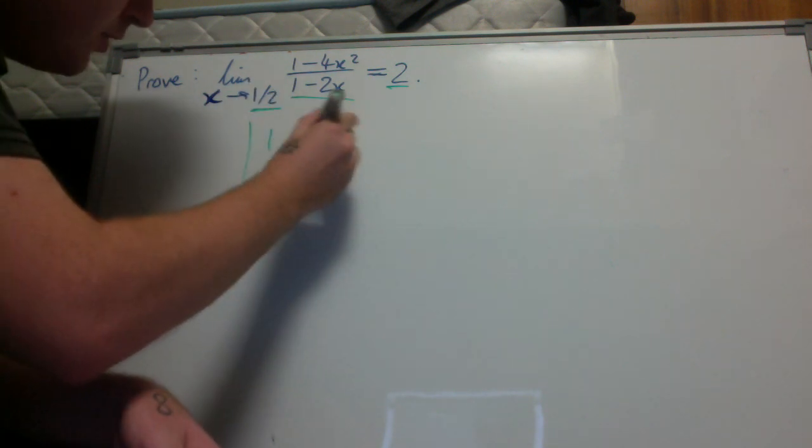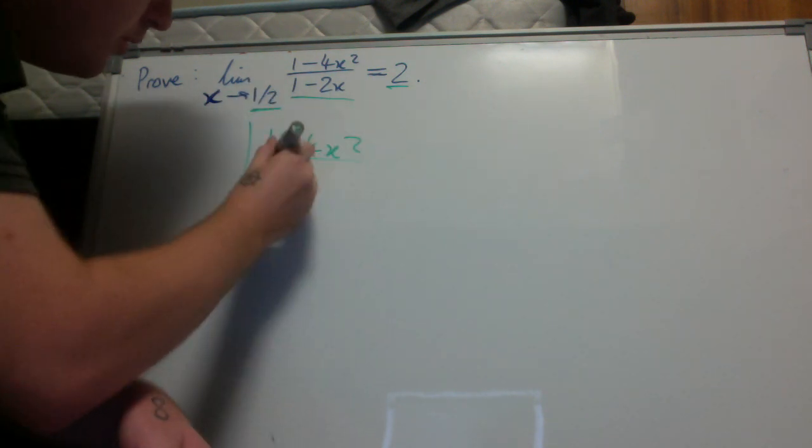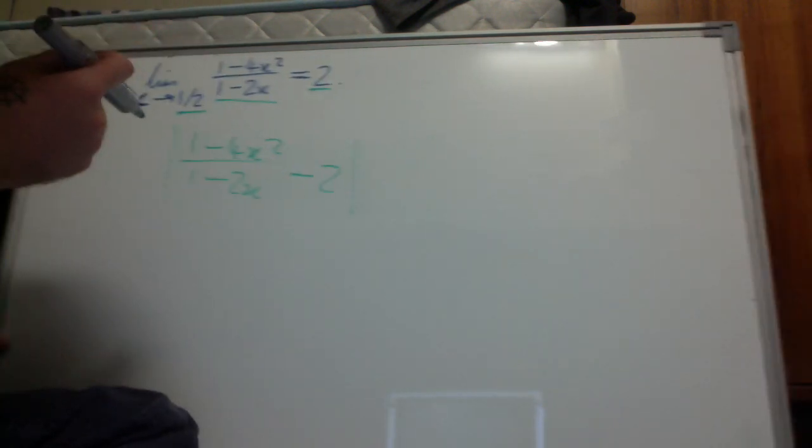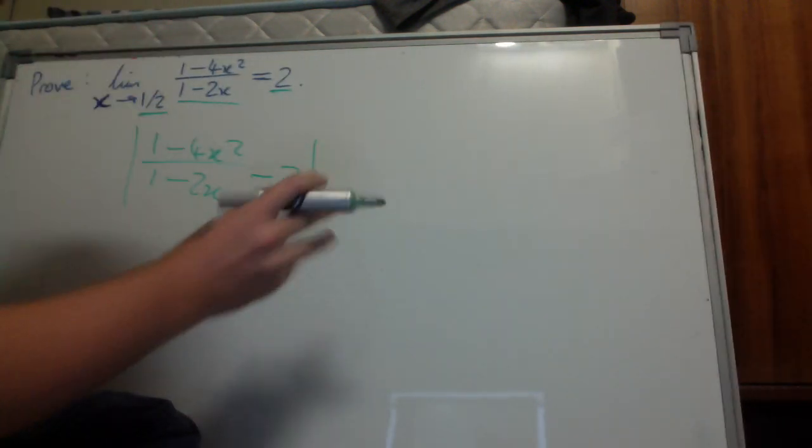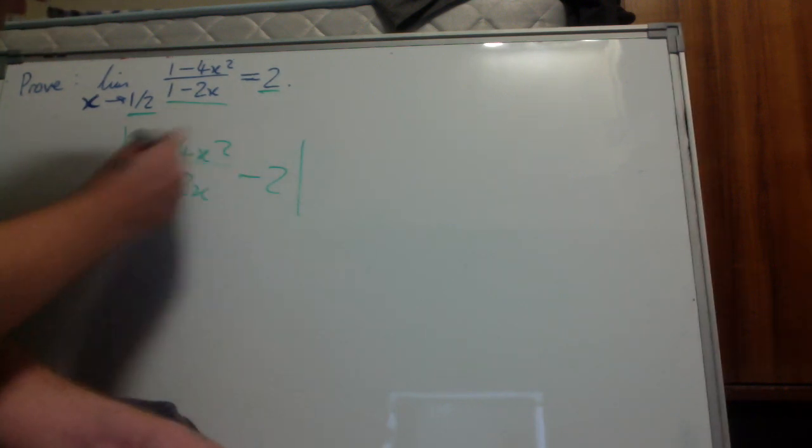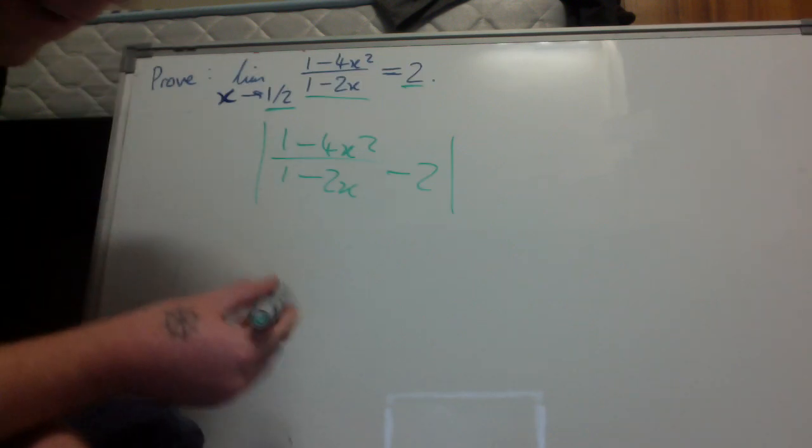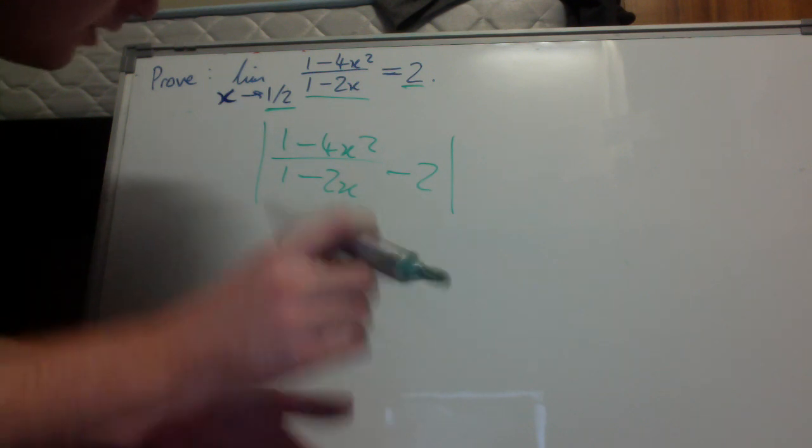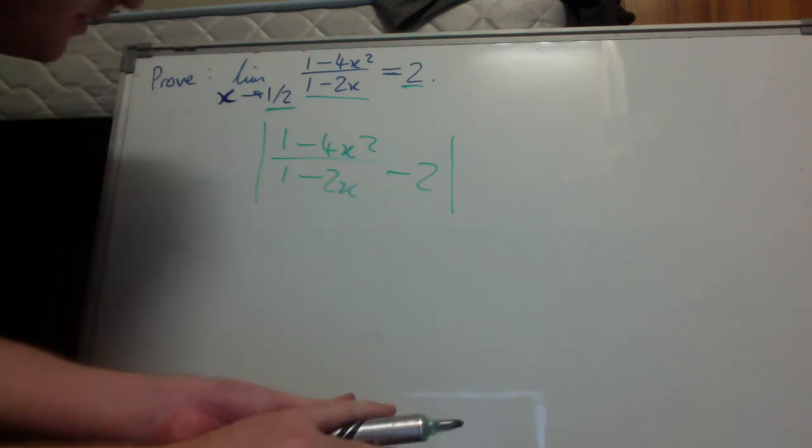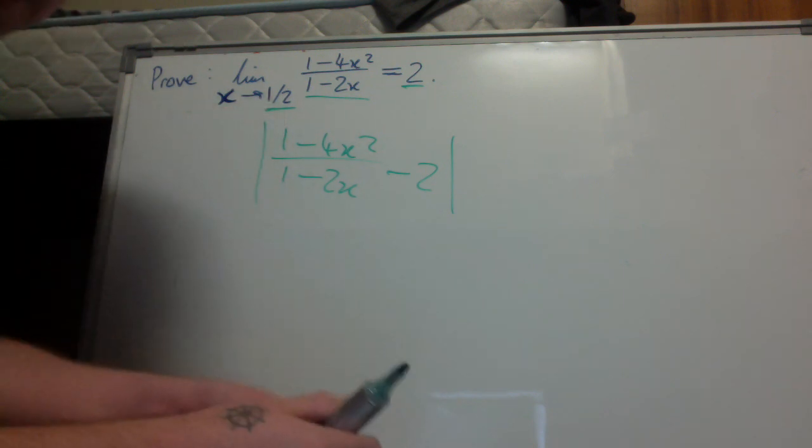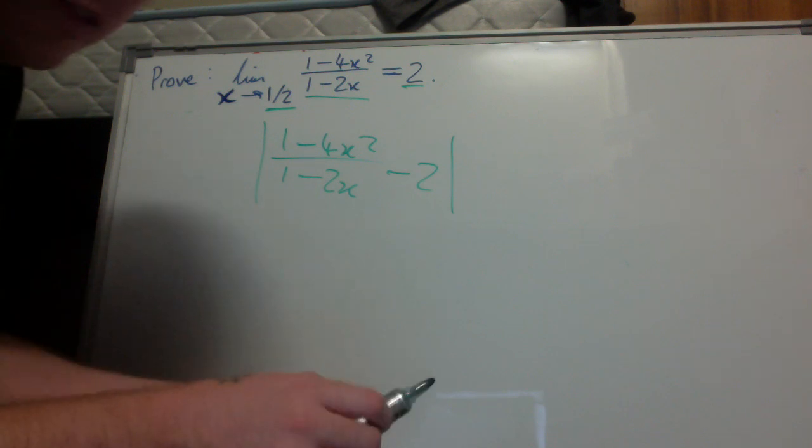We have |1 - 4x² / (1 - 2x) - 2|. First thing you want to notice is that the numerator of the function is a difference of two squares, and also the denominator will never equal zero because x never actually becomes a half, it only tends to a half.